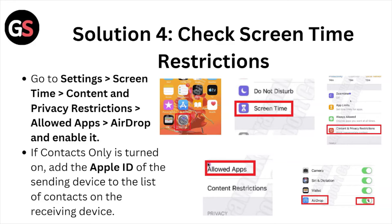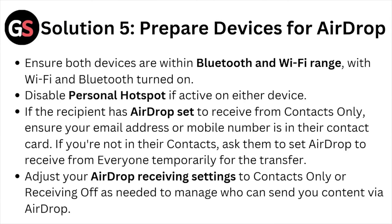Solution number five is to prepare both devices for AirDrop. Ensure both devices are within Bluetooth and Wi-Fi range, with Wi-Fi and Bluetooth turned on. Disable the Personal Hotspot on either device. If the recipient has AirDrop set to 'Contacts Only', ensure your email address or mobile number is in their contacts. If not, ask them to temporarily set AirDrop to 'Everyone' for the transfer. Adjust your AirDrop receiving settings — Contacts Only or Everyone — as needed.